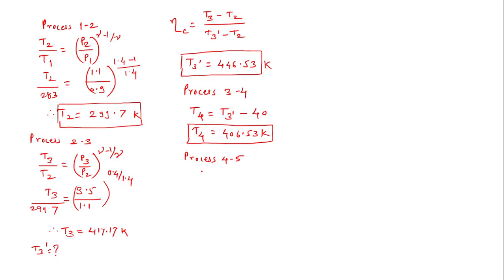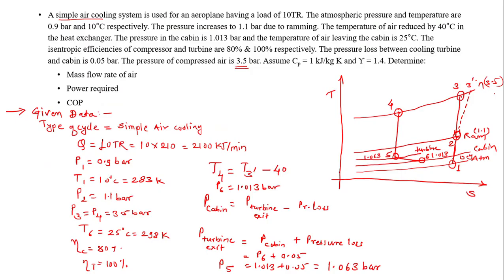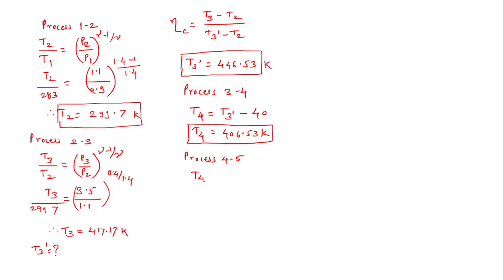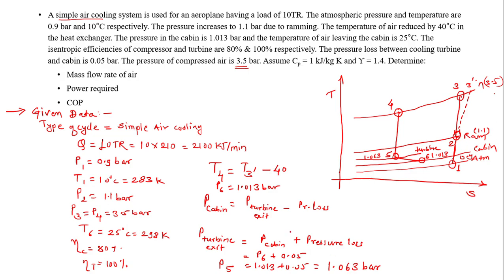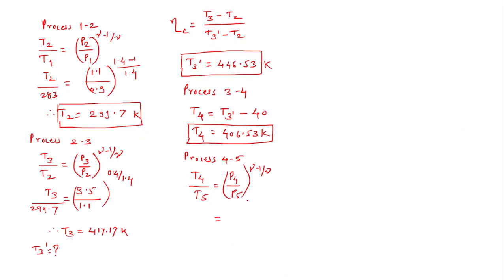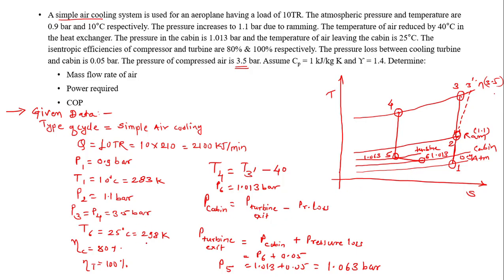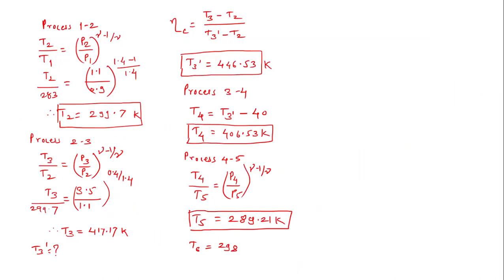For process 4→5 (isentropic expansion in turbine): T4/T5 = (P4/P5)^((γ−1)/γ). With P4 = 3.5 bar, P5 = 1.063 bar, and T4 = 406.53 K, we get T5 = 289.21 K. T6 is directly given as 25°C = 298 K. This completes all the temperatures at salient points.